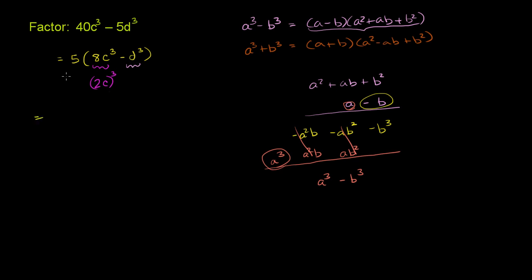So this is going to be equal to, let's put this 5 out front. I'll put brackets here, so we can view these brackets as being right over here. And then this is going to be a minus b. A here is 2c, so it's 2c minus b. And when we pattern match, the b here is d. Here's b to the third, here we have d to the third. So that over here is going to be d. That is going to be d times a squared.